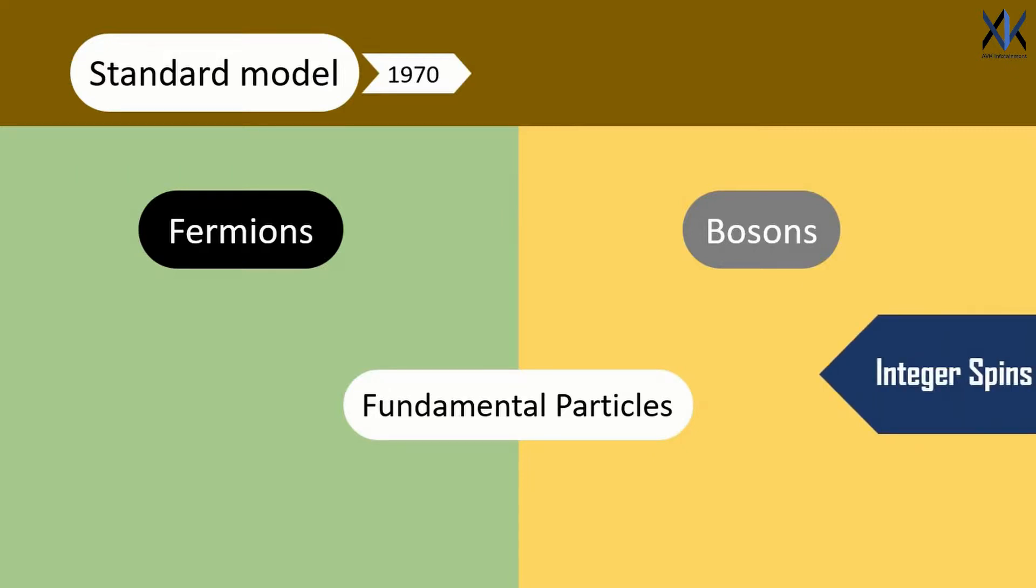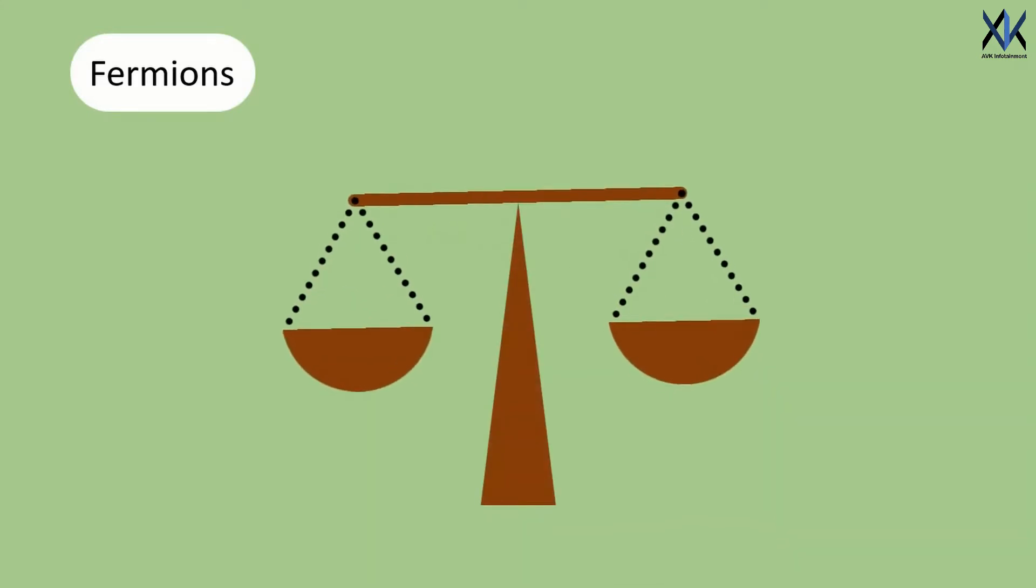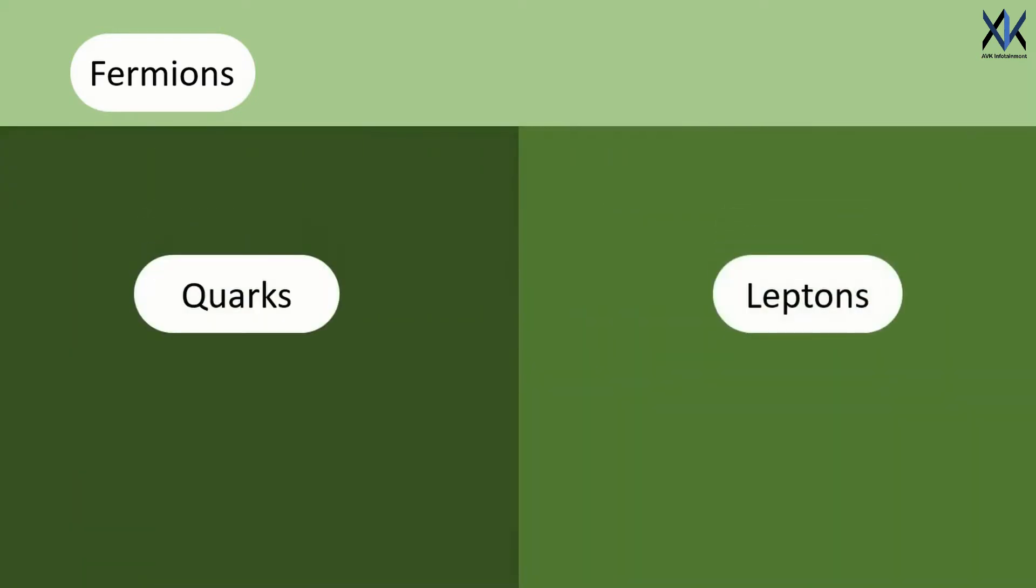Bosons have integer spins. The discovered ones have 0 or 1. While fermions have half integer spins. Fermions are called matter particles and make up most of the mass of the visible matter in the universe. They are further classified as quarks and leptons.